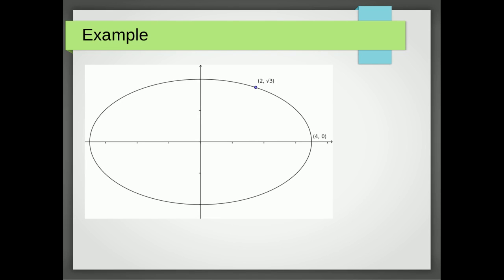So here's a second slightly more difficult example. This time I've given you where it cuts the x-axis and I've given you a point on the perimeter of our ellipse. So we know the value of a is 4, so that gives us x squared over 16 plus y squared over b squared equals 1 because we don't know where it cuts the y-axis.